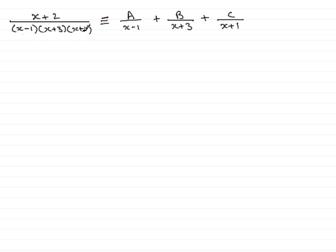Next, multiply both sides by the denominator. If you multiply this fraction by the denominator x minus 1, x plus 3, x plus 1, what you get is simply x plus 2. Then if we multiply each of these fractions in turn, in the first example the x minus 1 factor gets cancelled, leaving you with a times x plus 3, x plus 1.